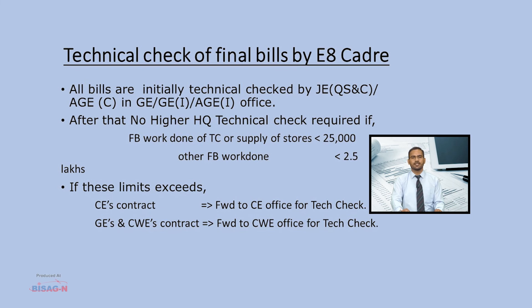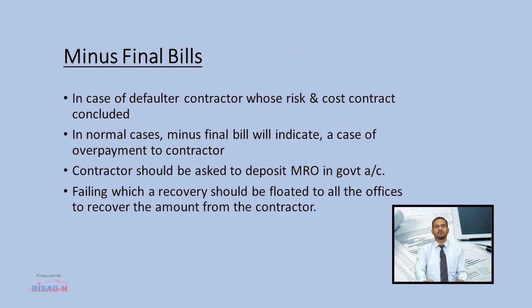At CWE office level, in case of term contract work orders, a minimum of 20% of final bills should be technically checked. For other works with work done less than 15 lakhs, a minimum of 25% of final bills should be technically checked. For works with work done more than 15 lakhs, final bills should be 100% technically checked.